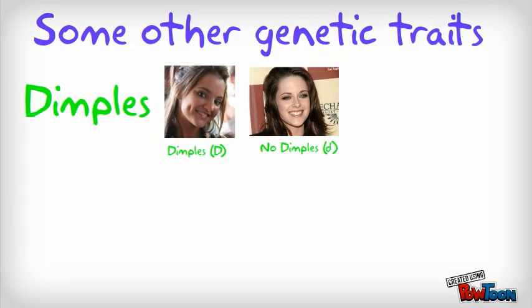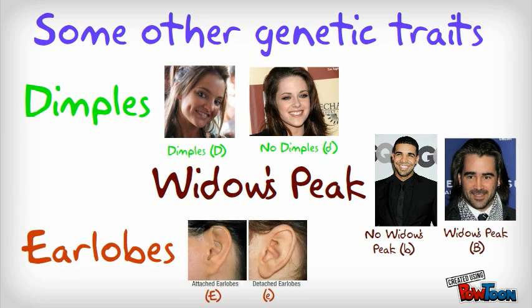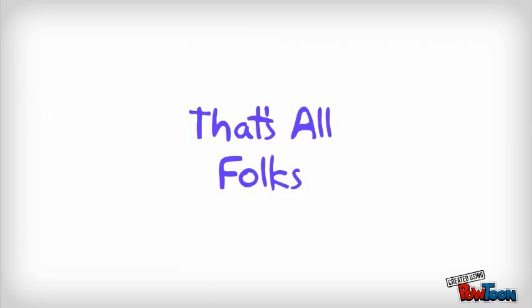Let's take a minute to look at a couple of other genetic traits that you have inherited from your parents. It may be helpful to pause the video as you take a look at these other examples of traits. That wraps it up for tonight's mini-lesson on inheritance of traits. Over the next couple of days in class, you will be doing a series of activities to investigate alleles, genotypes, and phenotypes a little bit further.